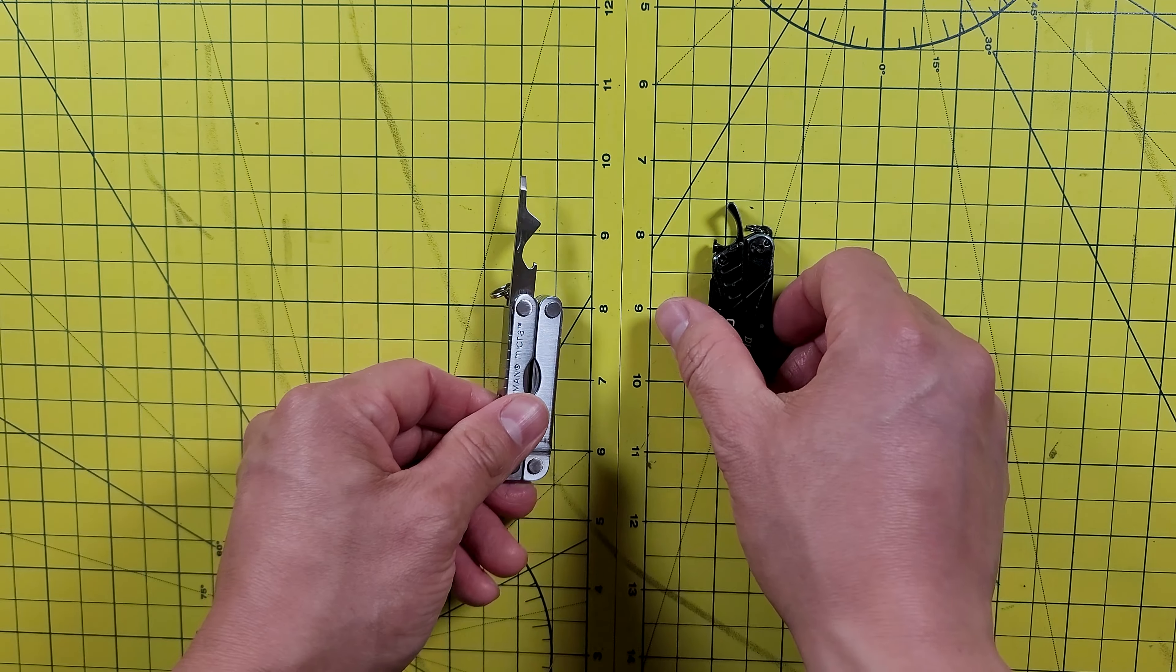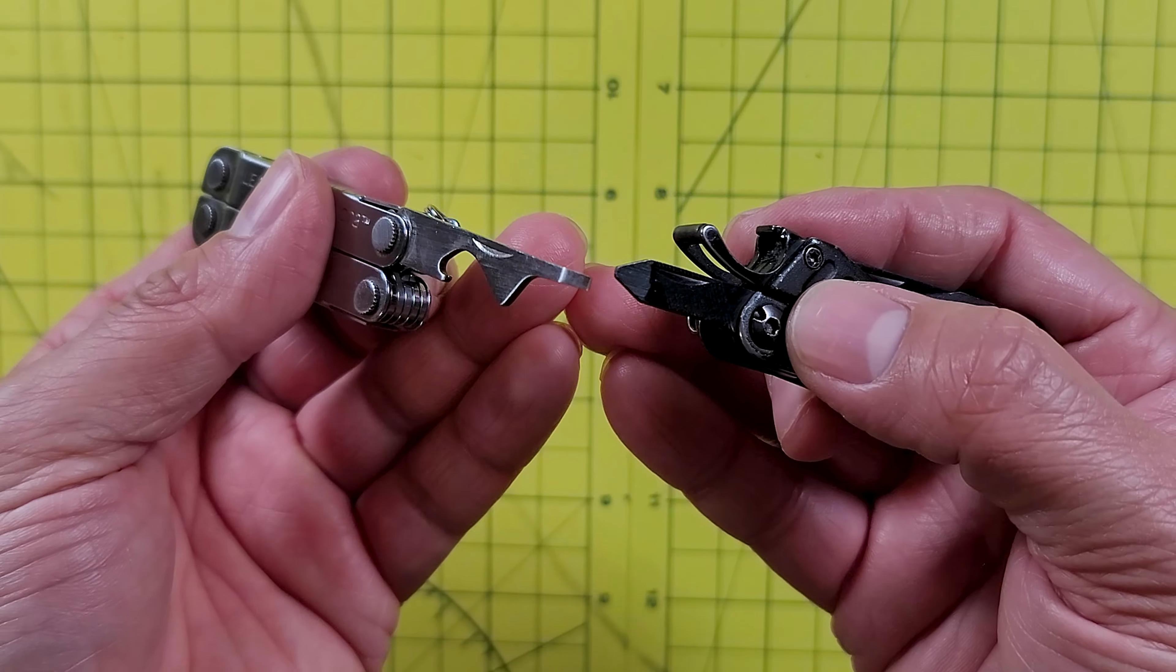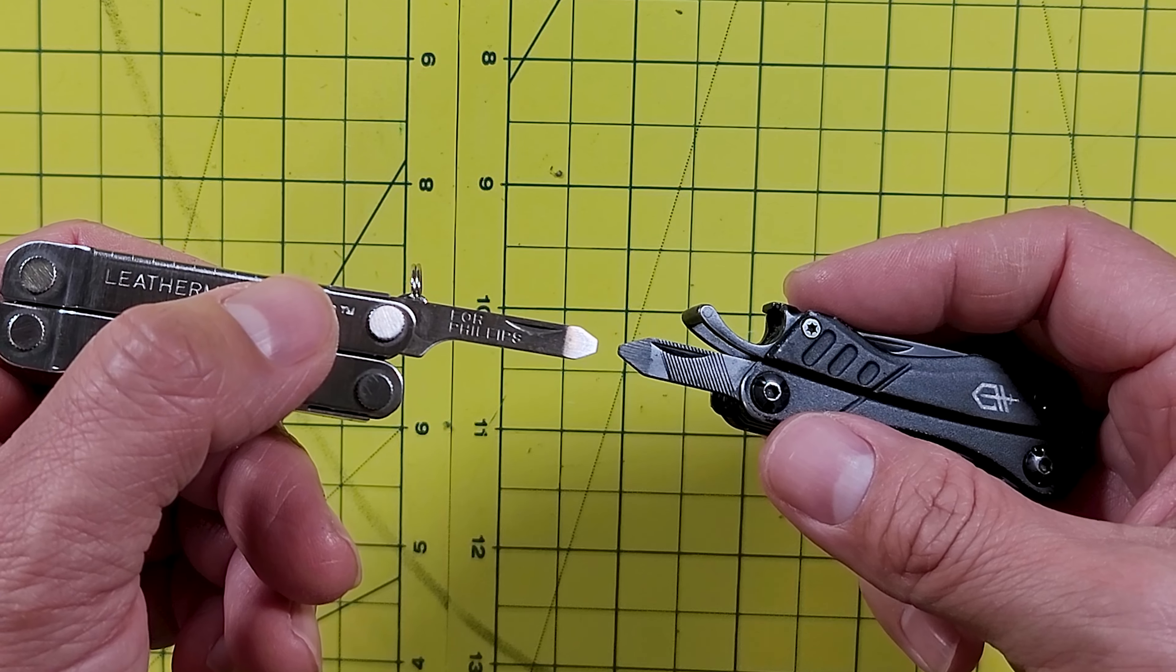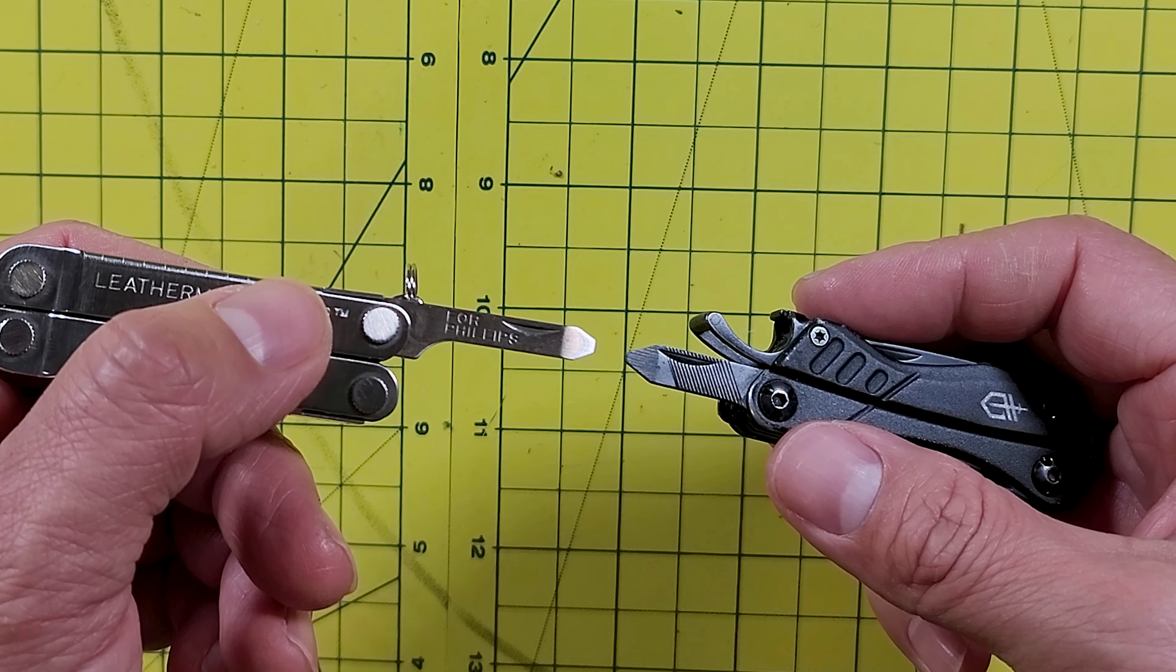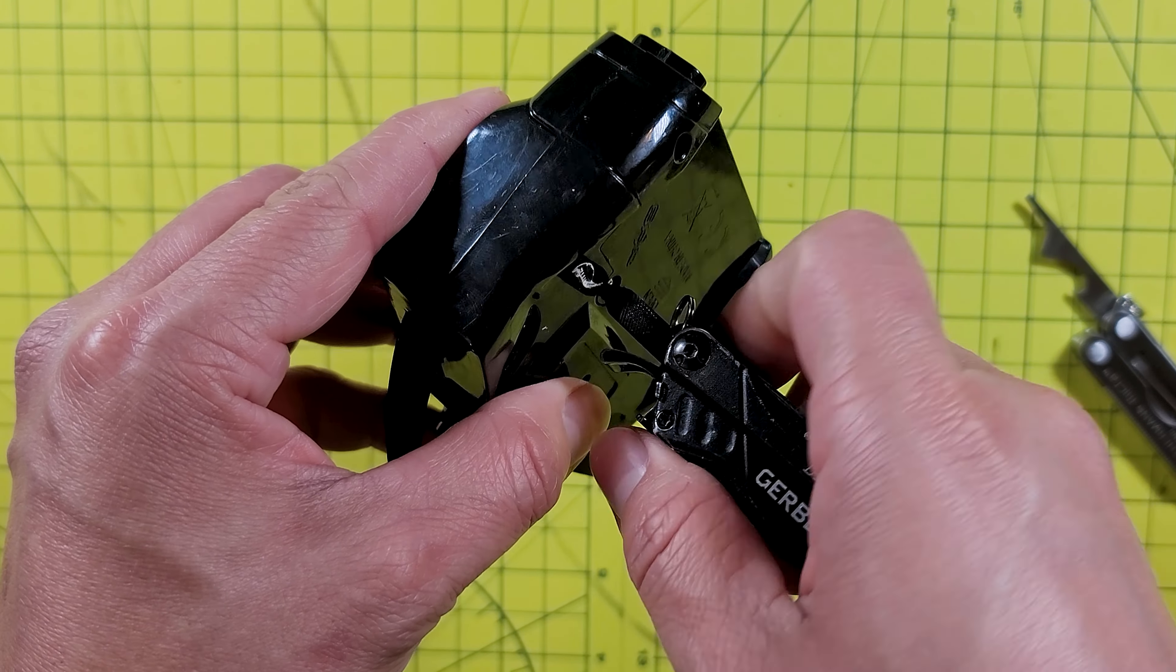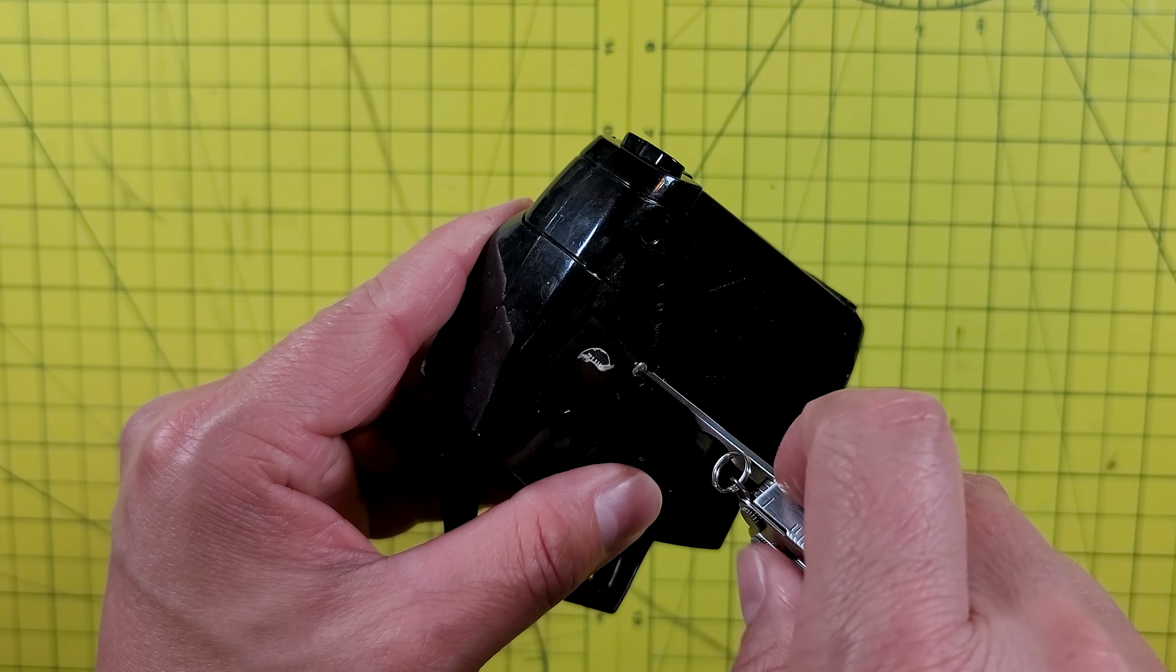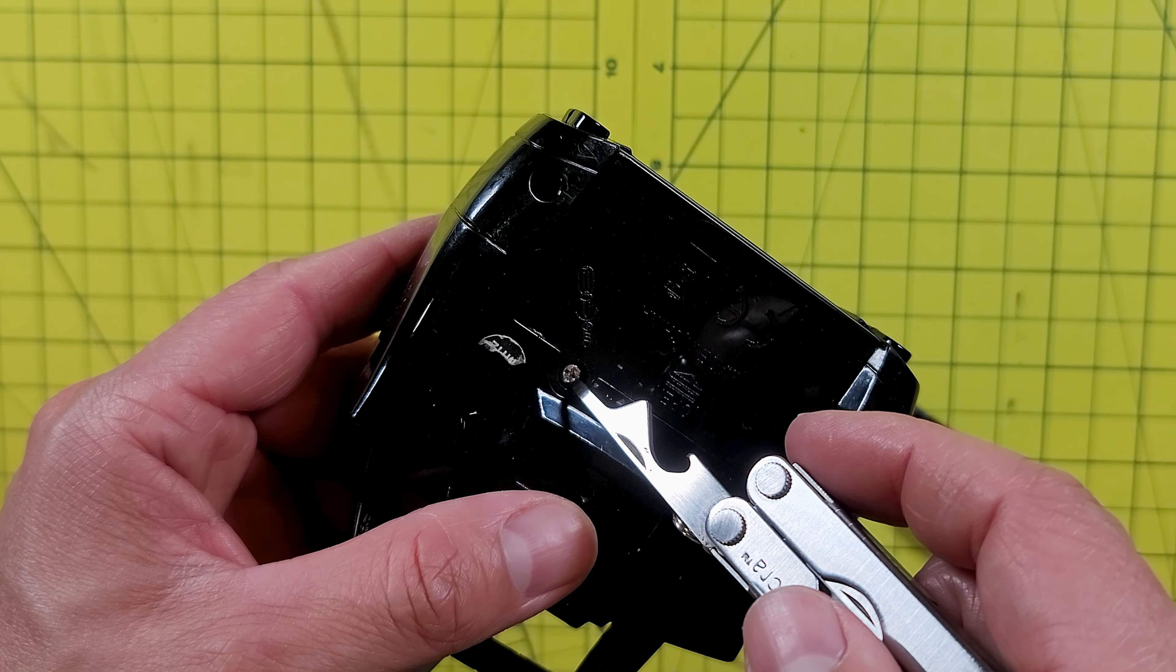Next you have the small screwdrivers. The small screwdriver on the Dime actually looks more like the Phillips screwdriver on the Micro, since it's a flat Phillips screwdriver. And it actually works just as good to remove Phillips screws like the Phillips screwdriver on the Micro. So maybe Gerber should rename the small flat screwdriver as a flat Phillips screwdriver. Since they're both very useful, we have a draw when it comes to the small screwdrivers as well.